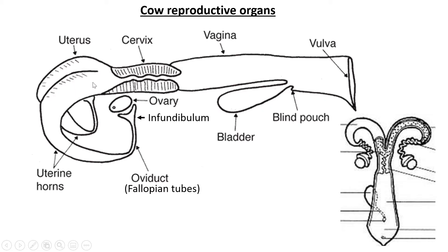From the uterine horns, the egg cell enters the uterus. Fertilization technically happens in the horn area. If fertilization has occurred, the resulting zygote — which then becomes an embryo and then a fetus — will develop inside the uterus. After the uterus, we have the cervix, a narrow area with thick walls on either side. From the cervix we have the vagina, and then the vulva, which is the external reproductive organ of the cow. The penis of a bull is placed inside here, sperm is released into the vagina, travels through the cervix to the uterus, and fertilization typically occurs in the uterine horn or oviduct.